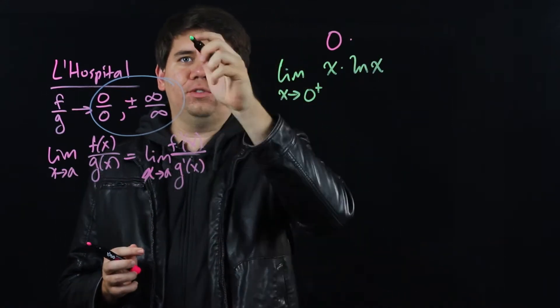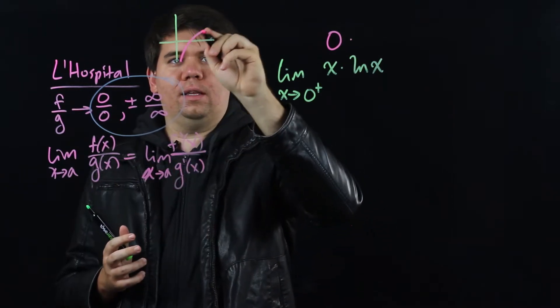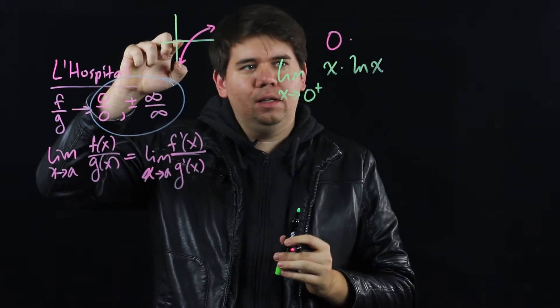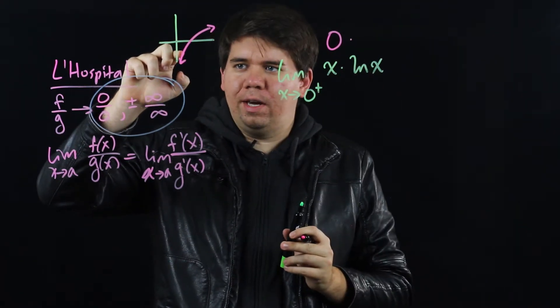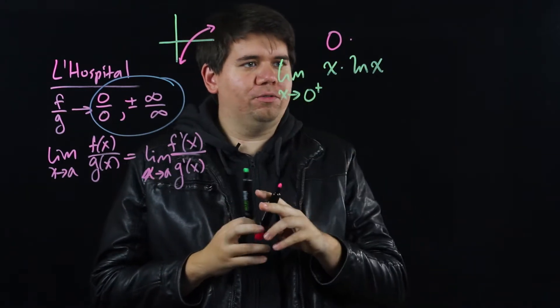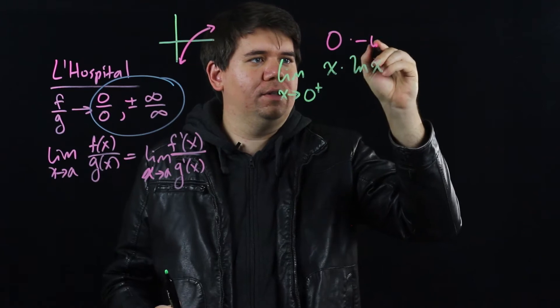You might recall the natural log of x looks something like this. As values get closer and closer to 0, the natural log of those values become greater and greater negative. So as you come to 0 from the right, natural log of x will be approaching negative infinity.